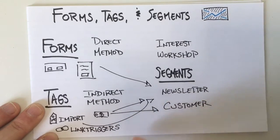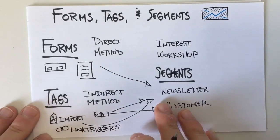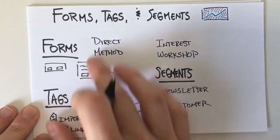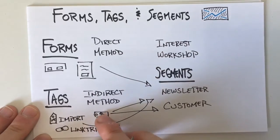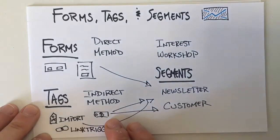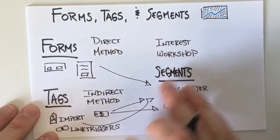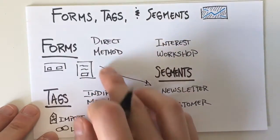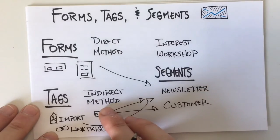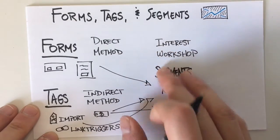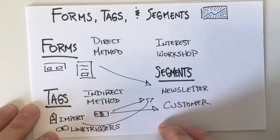So I hope that explains it a little bit better for you. You can see how forms and tags are different but similar in the way that you can organize them. And there's another video that shows how to really use forms, tags, and segments together well. But those are the differences. Again, direct method, more of an indirect method, and then segments is how you put them all together in a targeted way that makes sense for you.